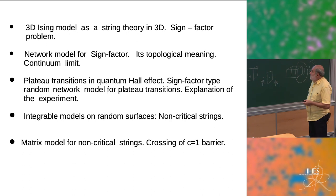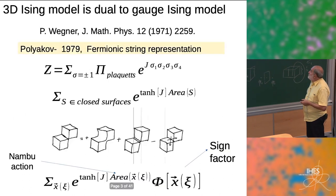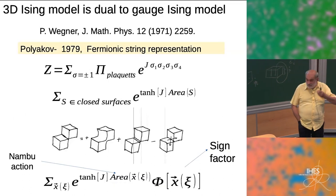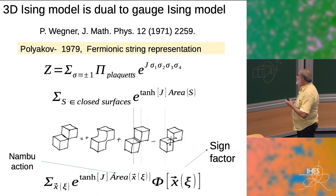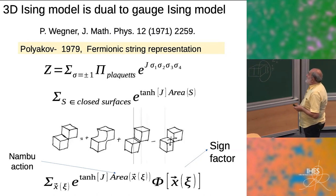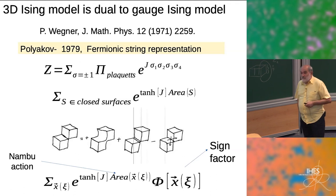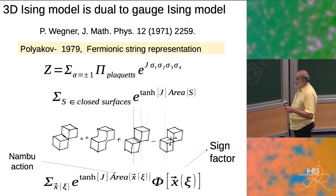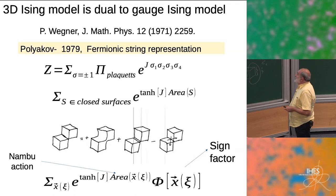So this is my plan. I will remind the basic things coming from Wagner and Polyakov. Wagner formulated a gauge version of the Heisenberg model and analyzed its duality property. Then Polyakov came.